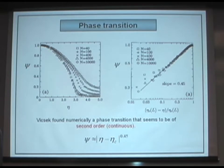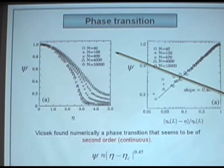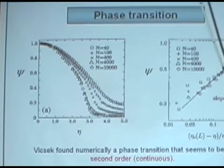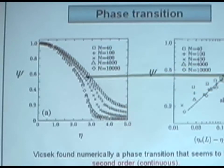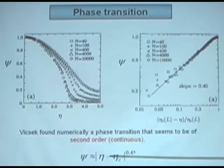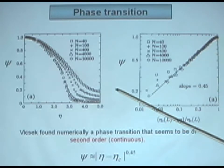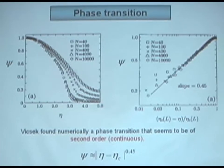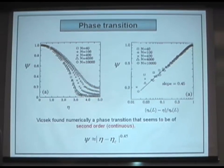Vicsek found numerically a phase transition that seems to be of second order continuous, and these are the original figures that appear in his paper. By increasing the size of the system, this curve seems to approach a continuous phase transition. They say that close to the phase transition, the order parameter goes to zero as some power of the difference between the critical noise and the actual noise. But these are numerical experiments, numerical simulations. There is no theory to corroborate these curves.